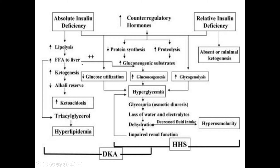On the other side, counter-regulatory hormones — mainly glucagon — cause increased proteolysis. Both free fatty acids and amino acids from proteolysis act as gluconeogenic substrates, so gluconeogenesis increases. Additionally, glycogen breakdown (glycogenolysis) also occurs. Glucose utilization is decreased because insulin is absent, so all three factors — reduced glucose utilization, increased gluconeogenesis, and increased glycogenolysis — contribute to hyperglycemia.